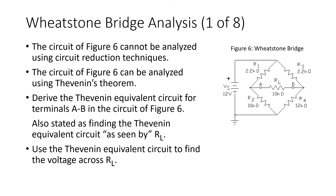Let's look at another example — the circuit of figure 6, which is an unbalanced Wheatstone bridge circuit. When we discussed Wheatstone bridges, we said we could not reduce and analyze an unbalanced bridge because there's more than one current flowing through resistors R2 and R4. However, we can use Thevenin's Theorem to analyze this circuit. We'll derive the Thevenin equivalent circuit as seen by RL, and then use it to find the voltage across RL.